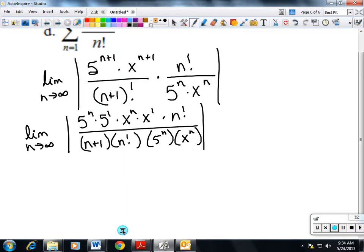That's a lot of writing. So 5^n's are gone, x^n's are gone, n factorials are gone. So all that I'm left with here is, again I can pull my x out, the absolute value of x times the limit as n goes to infinity of 5 over (n+1).